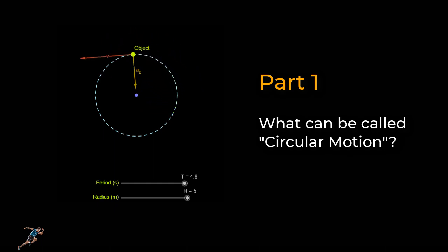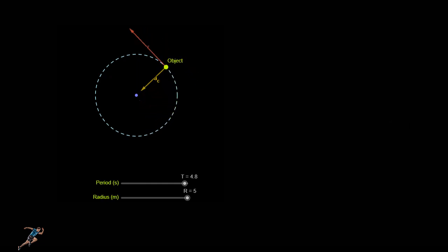You can say that an object is undergoing uniform circular motion if it travels in a circle at a constant speed.